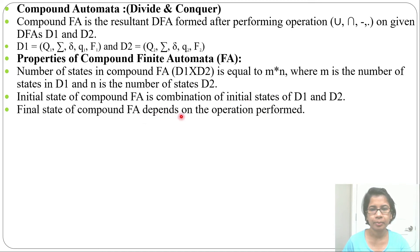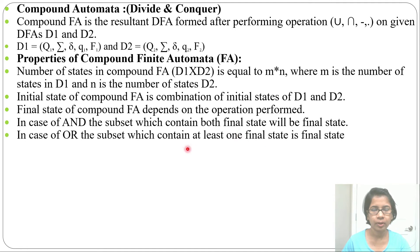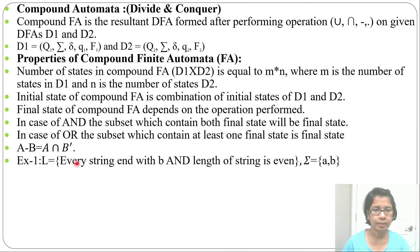The final state of the compound FA depends on the operation being performed — union, intersection, or difference. In the case of intersection (AND), the subset which contains both final states will be the final state. In the case of union (OR), the subset which contains at least one final state will be the final state. For difference, A minus B can be written as A intersection B-complement.